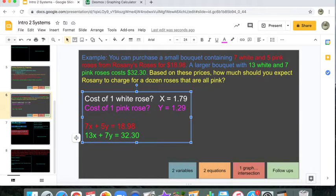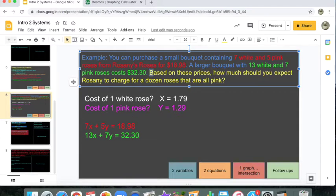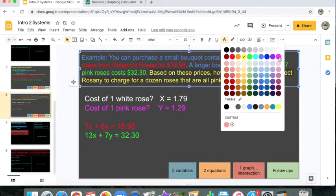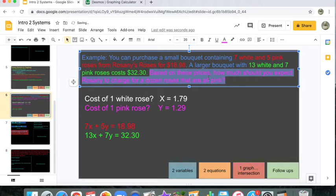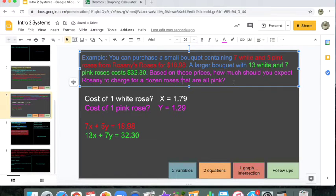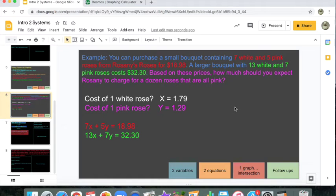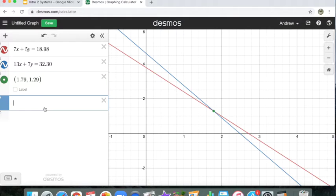Now that I have the information I want, now I can answer this follow-up question. Based on these prices, how much is it going to cost for a dozen roses that are all pink? $1.29 times 12. Right? $15.48. Bang.